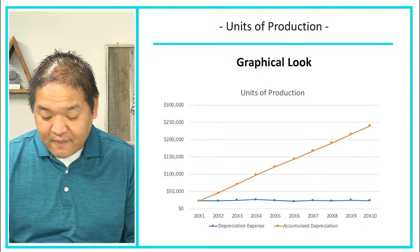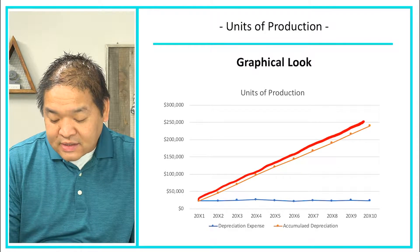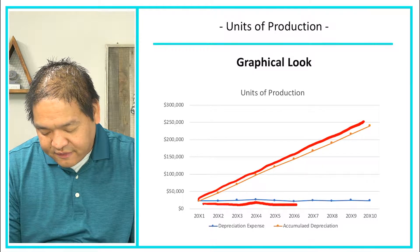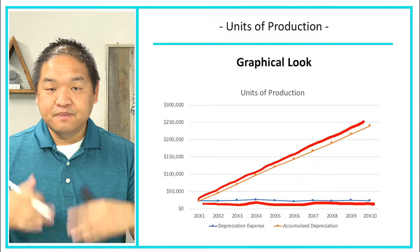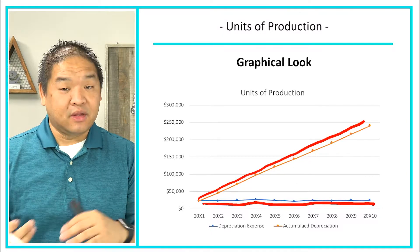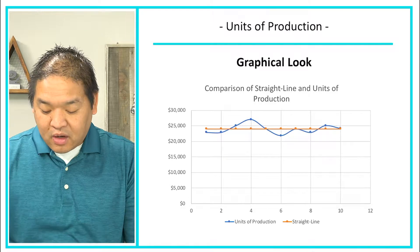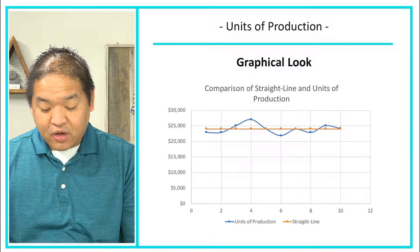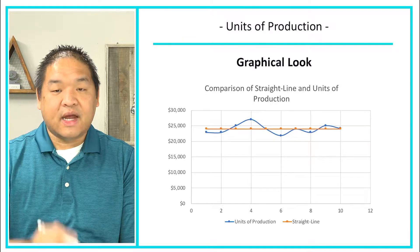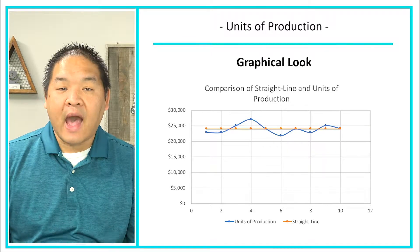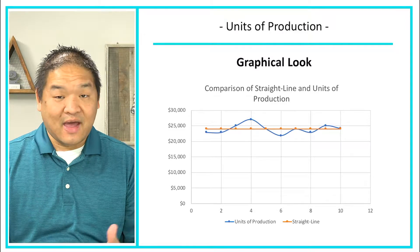Here is a graphical look. Notice that we still have an upward bound on accumulated depreciation. There are little peaks and valleys in the depreciation expense line — it's not as straight as the straight-line method because it's based on production. If we use it more, we take more depreciation; use it less, we take less. Looking at a comparison graph: our orange line is the straight-line method and our blue line is units of production. The straight line stays constant at $24,000, but the blue line fluctuates all over the place depending on usage.